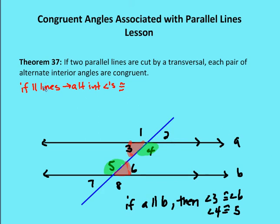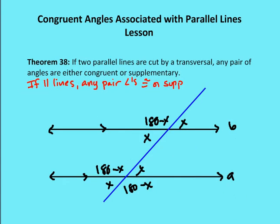If you want to write this shorthand, you would write: if parallel lines, then alternate interior angles are congruent. Theorem 38: if two parallel lines are cut by a transversal, any pair of angles are either congruent or supplementary.